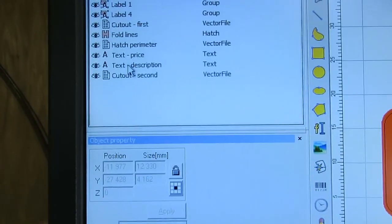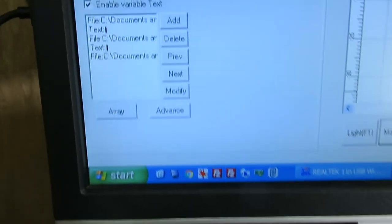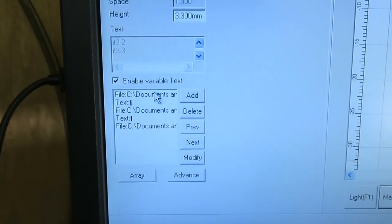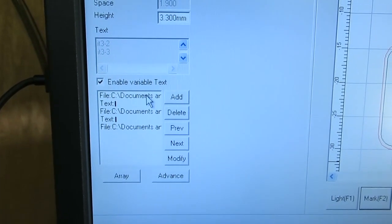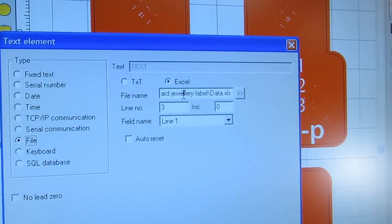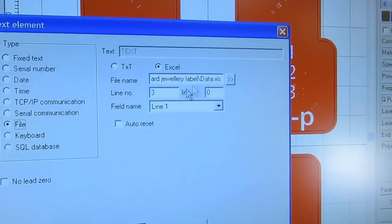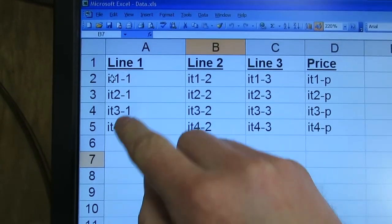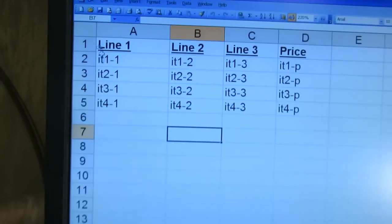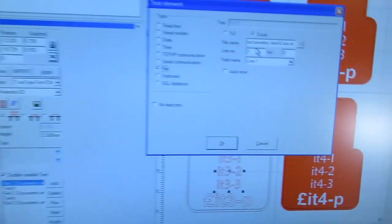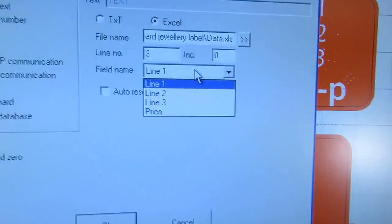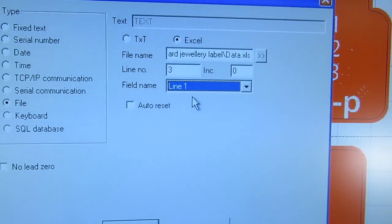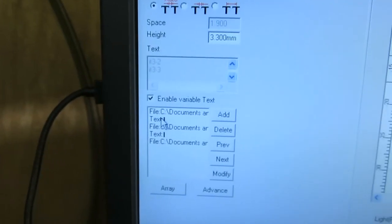So if I look at description first of all and look down here, I've got variable text enabled and I've got several elements in the list. So if I look at the first one you can see it's reading data from that Excel file. Line number three, which is, remember EasyCAD starts counting as line one is here, so one, two, three is indeed item three. Close that. And it's reading in the line one field name.